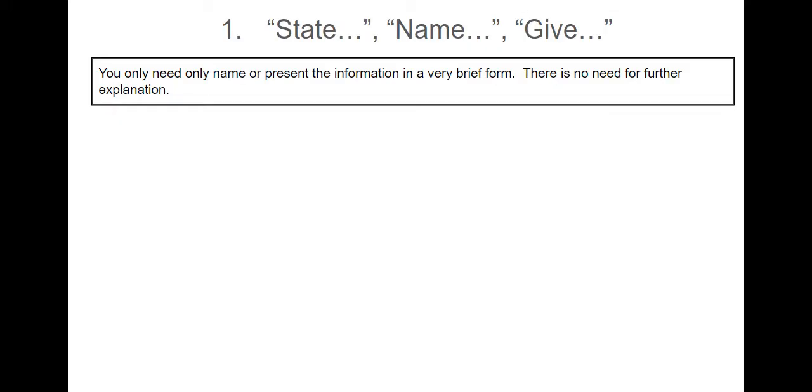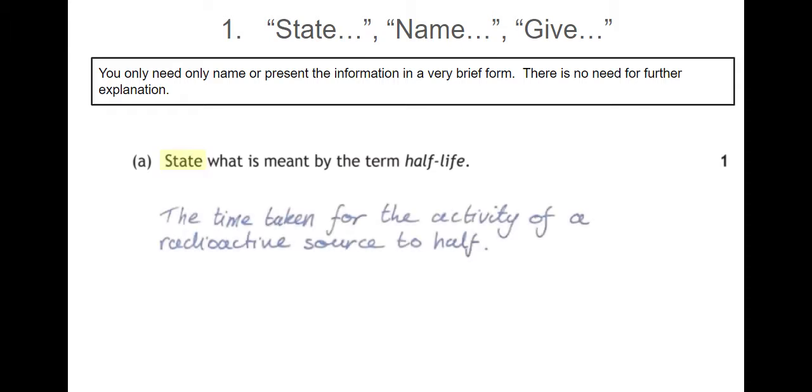So let's start with number one: state, name, or give. In these sort of questions you only need to present information in a very brief form. There's no need for any further explanation. For example, state what is meant by the term half-life. You just need to say the time taken for the activity of a radioactive source to half. One mark.